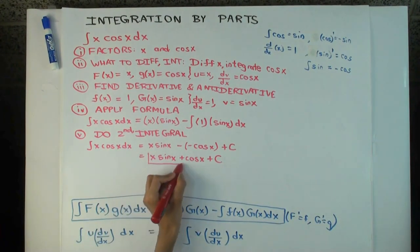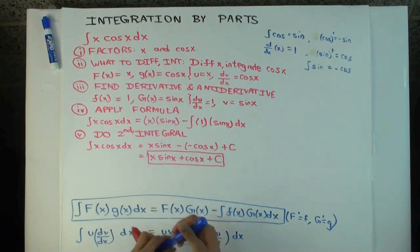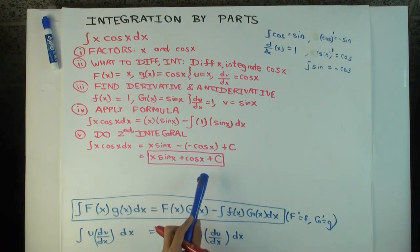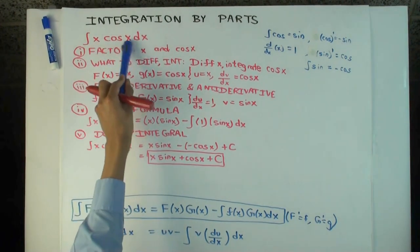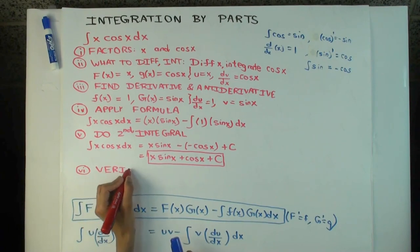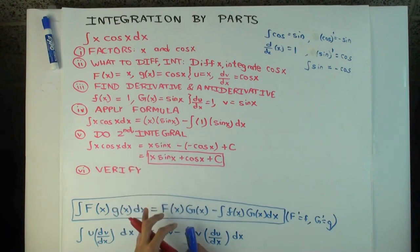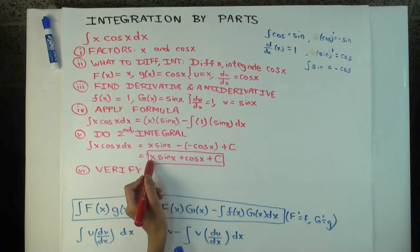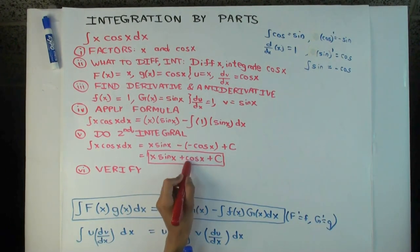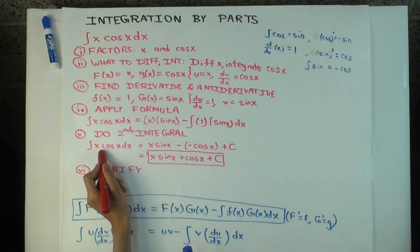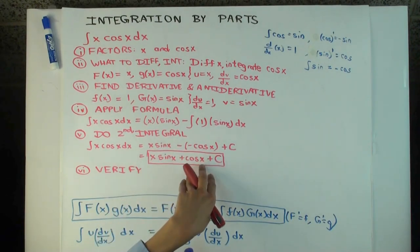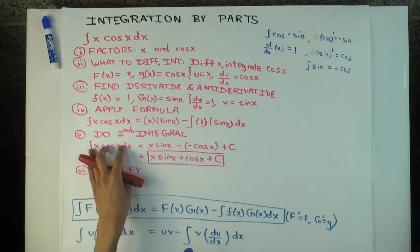You can check that this answer is correct by differentiating it. What should you get as the derivative? x times cos x — the original thing you were integrating. Using the product rule: derivative of x·sin x gives sin x + x·cos x, plus the derivative of cos x gives −sin x. The −sin x cancels the sin x, leaving just x·cos x. That's how most verifications of integration by parts go: product rule terms cancel in pairs, and you're left with the original integrand.